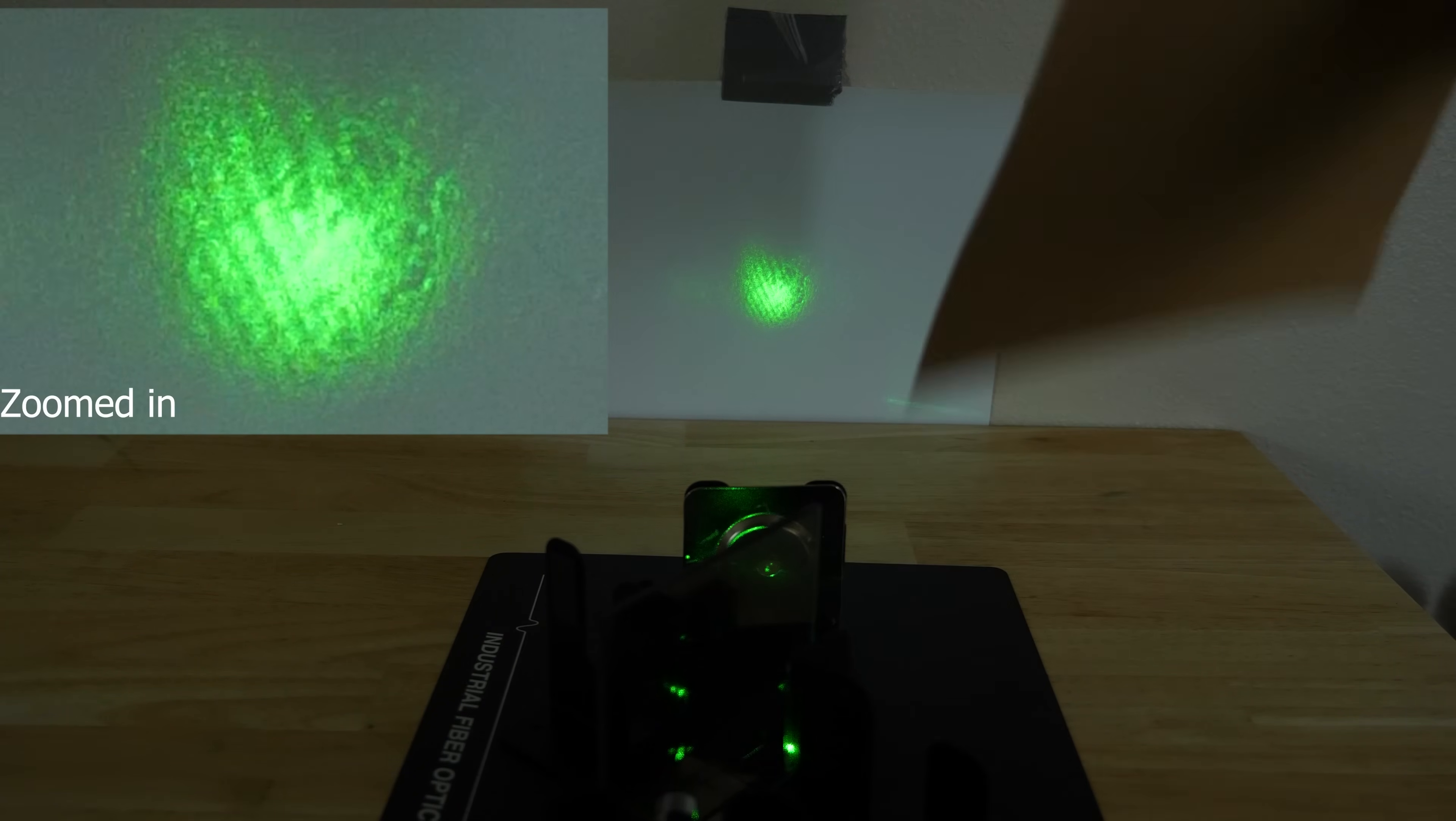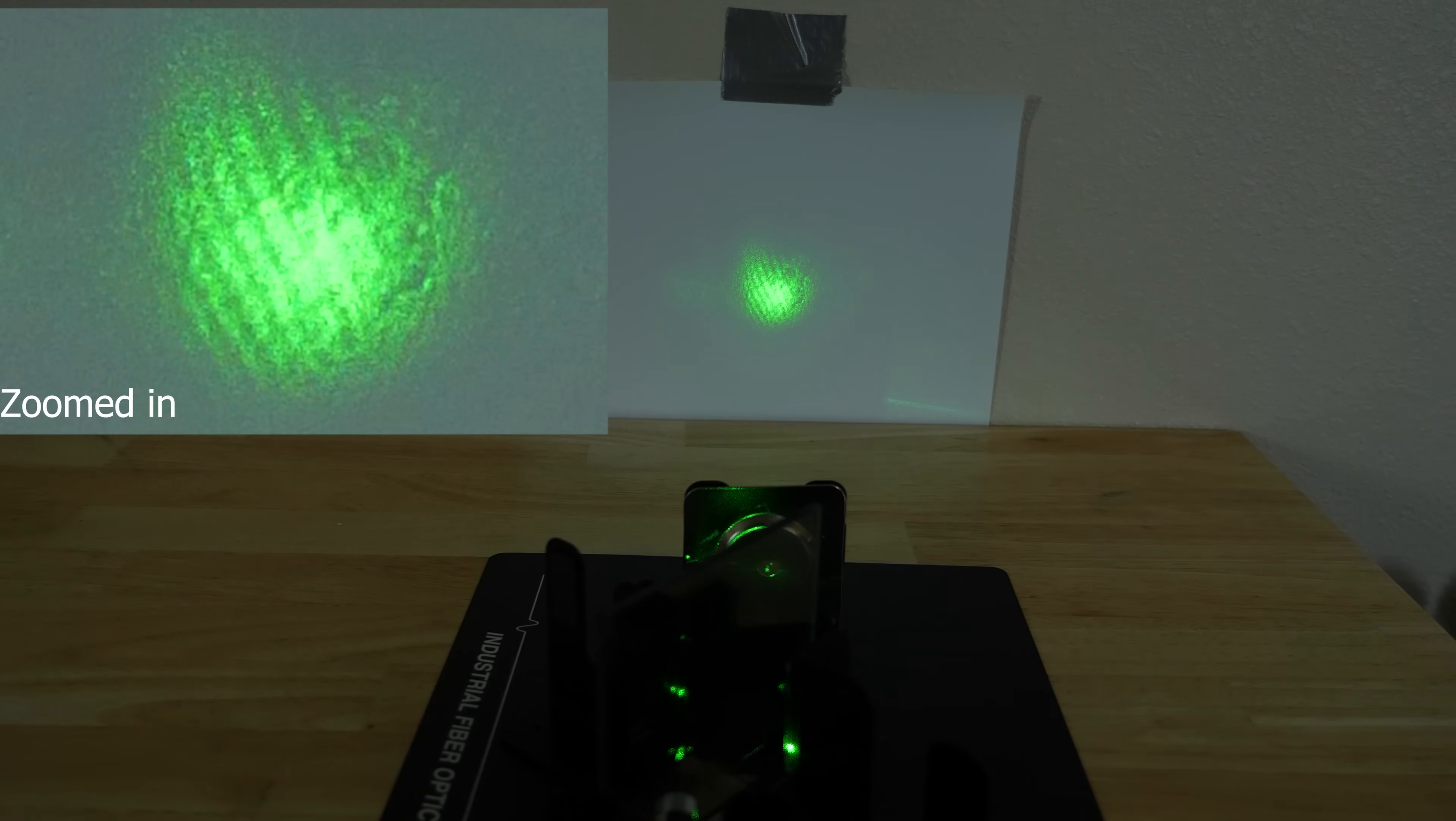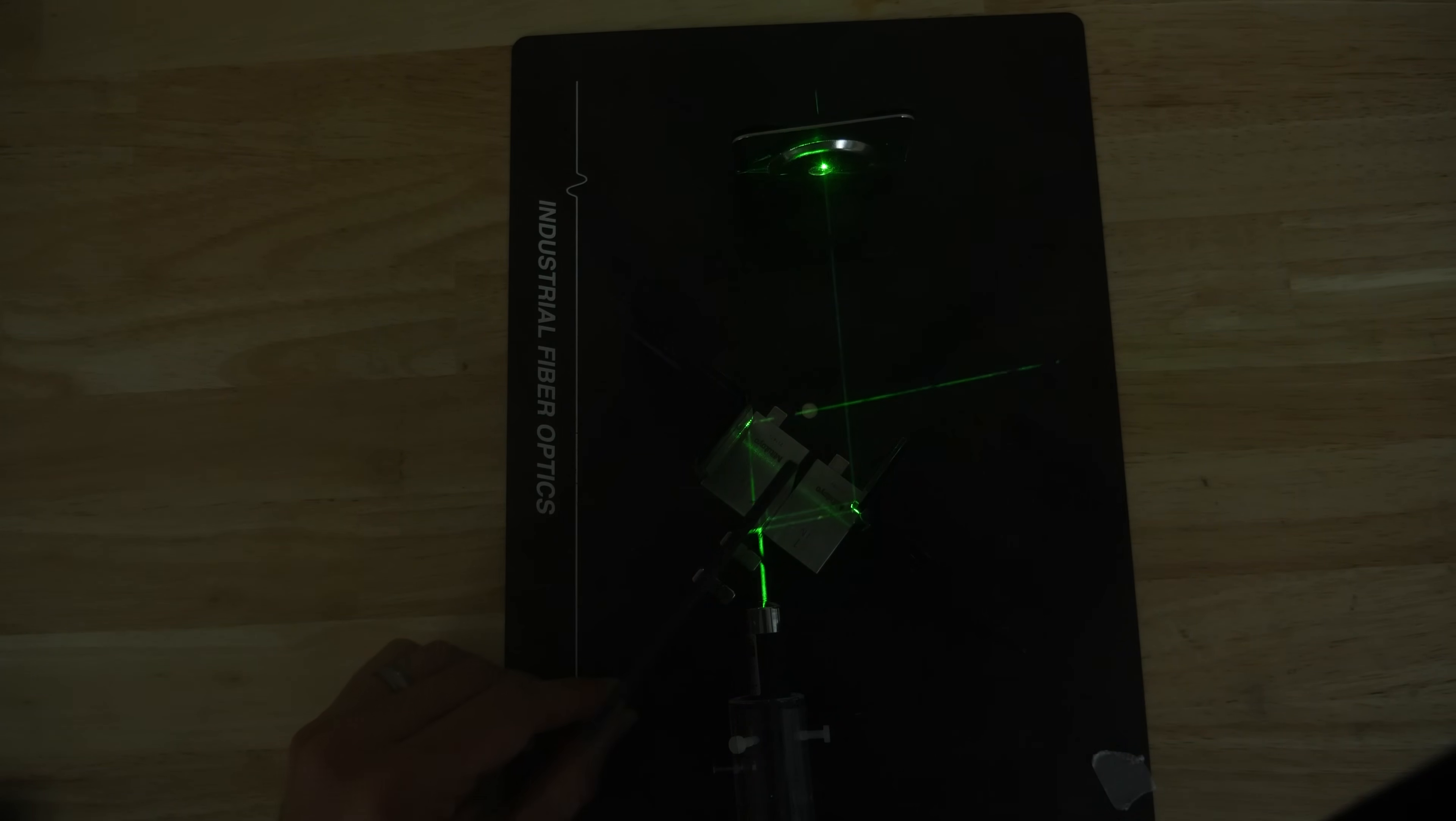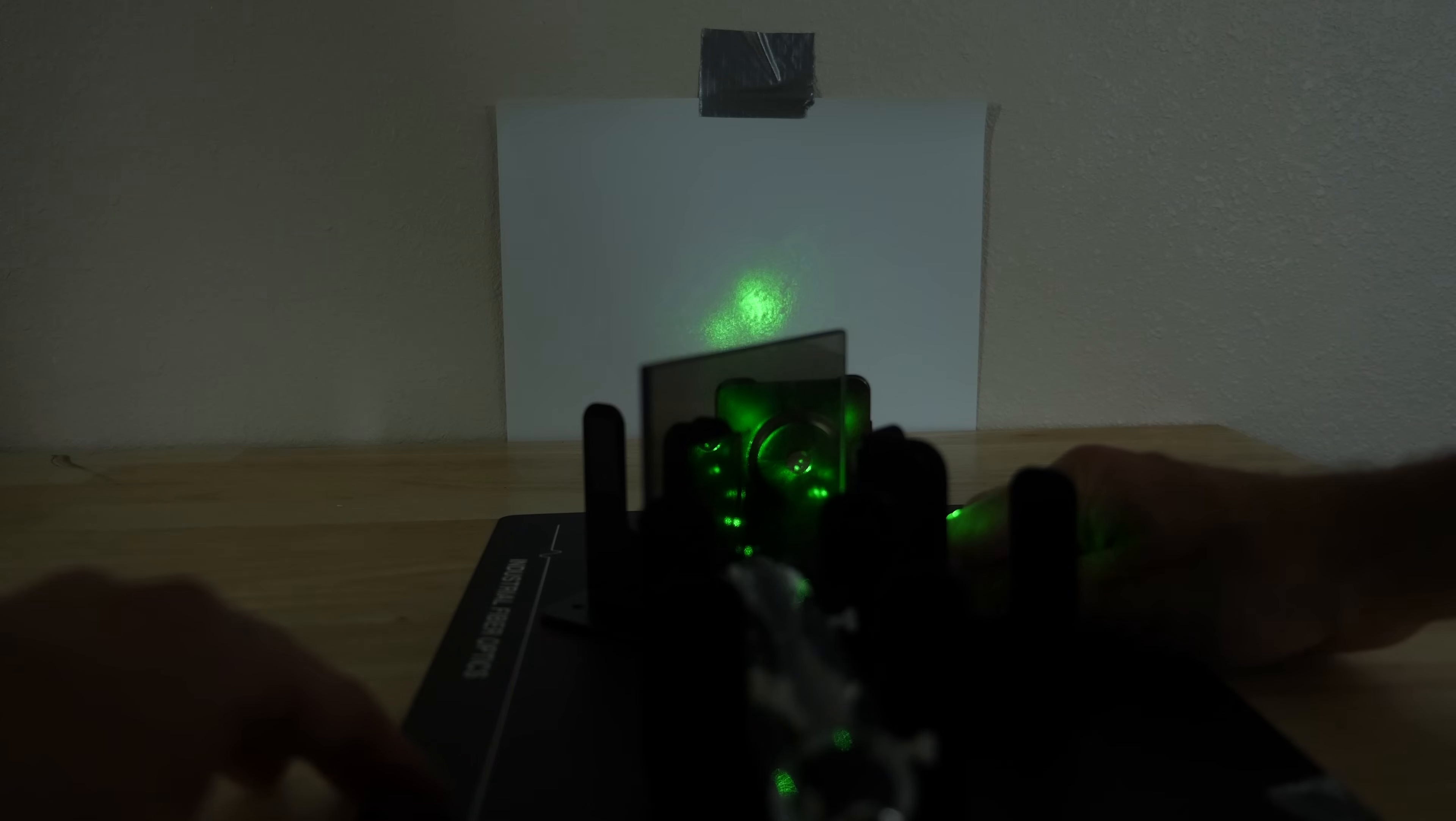When I block one of the mirrors, you can see that the interference pattern disappears. But if I remove the second beam splitter by sliding it out of the way, then we just have two beams of light.